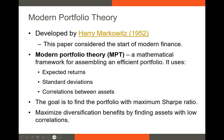The Sharpe ratio is essentially portfolio return minus risk-free rate, divided by the standard deviation of the portfolio. One thing you'll see throughout this video is that we maximize our diversification benefits by finding assets that have really low correlations, or even negative correlations, with one another. This is the big benefit of diversification — we can find a higher Sharpe ratio by finding assets with very low correlation.